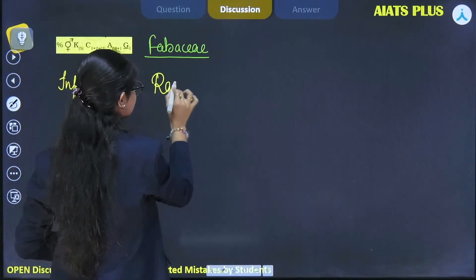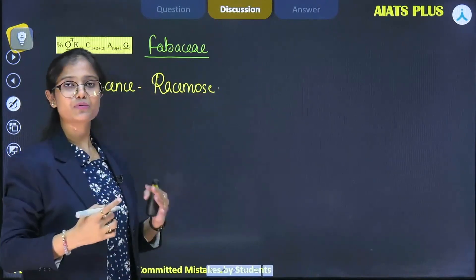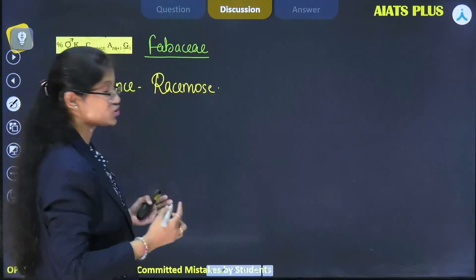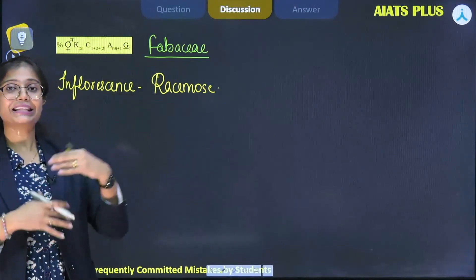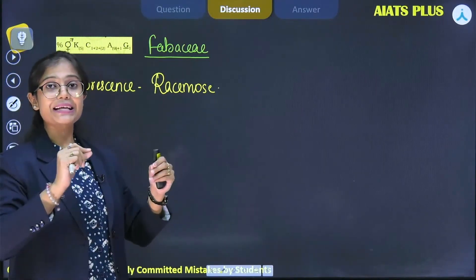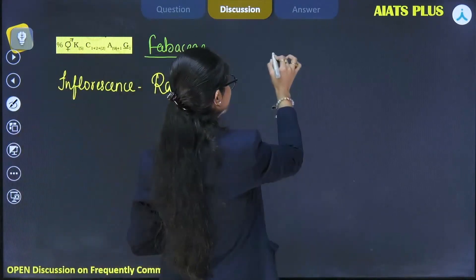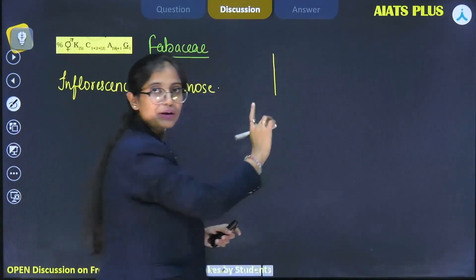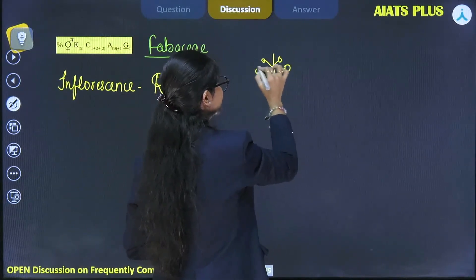What do you understand by racemose type of inflorescence? It's one in which the older flowers are present towards the base of the plant and the younger ones towards the apex, but the main axis does not terminate - it grows indefinitely.